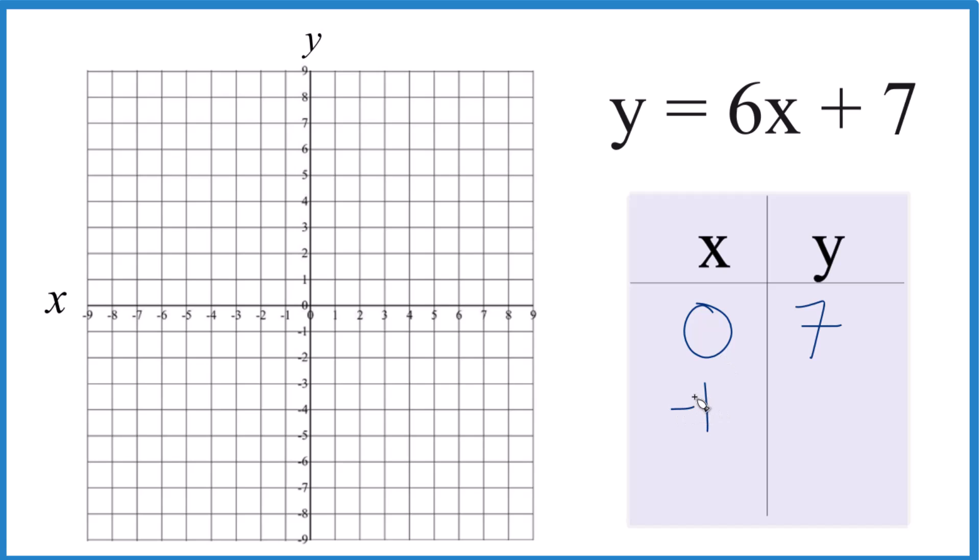Let's call it negative 1. 6 times negative 1, that's negative 6, plus 7, that just gives us 1. It's kind of nice. And I'm just making these values up here. Any value I put in is going to be on the line for y equals 6x plus 7, but I want values that I can plot here on this graph.